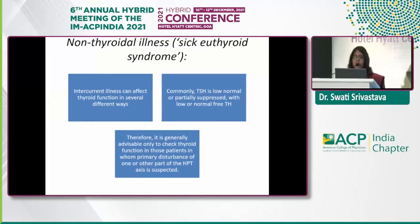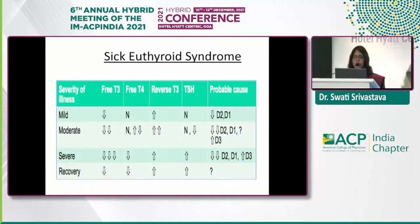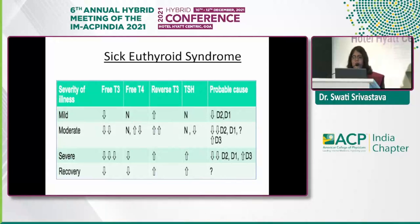Non-thyroidal illness — sick thyroid syndrome — is a very important cause. Intercurrent illness can affect thyroid function in several ways. Commonly, TSH is low-normal or partially suppressed with low or normal free T3. In sick thyroid syndrome, there is decreased activity of D1 and D2 deiodinases that convert T4 to T3 peripherally, and increased activity of D3 which converts T3 to reverse T3, leading to elevated reverse T3 and reduced TSH. We should avoid testing thyroid hormones during intercurrent illness and reconfirm after recovery.